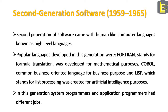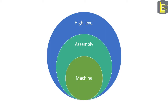The second generation of software came with human-like computer languages known as high-level languages. Popular languages developed in this generation were Fortran — which stands for Formula Translation, developed for mathematical purposes — COBOL, which was developed for business purposes, and LISP — which stands for List Processing — created for artificial intelligence purposes. In this generation, system programmers and application programmers had different jobs. This represents the concept of abstraction in computer science: programmers working with high-level languages don't have to care about how assembly language or machine language in a device works.